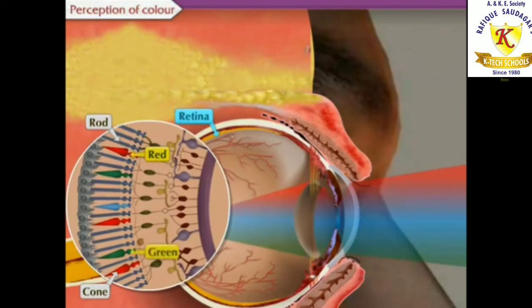The conical cells can respond differently to red, green, and blue colors. When red color falls on the eyes, the cell responding to red light gets excited more than those responding to the other colors.